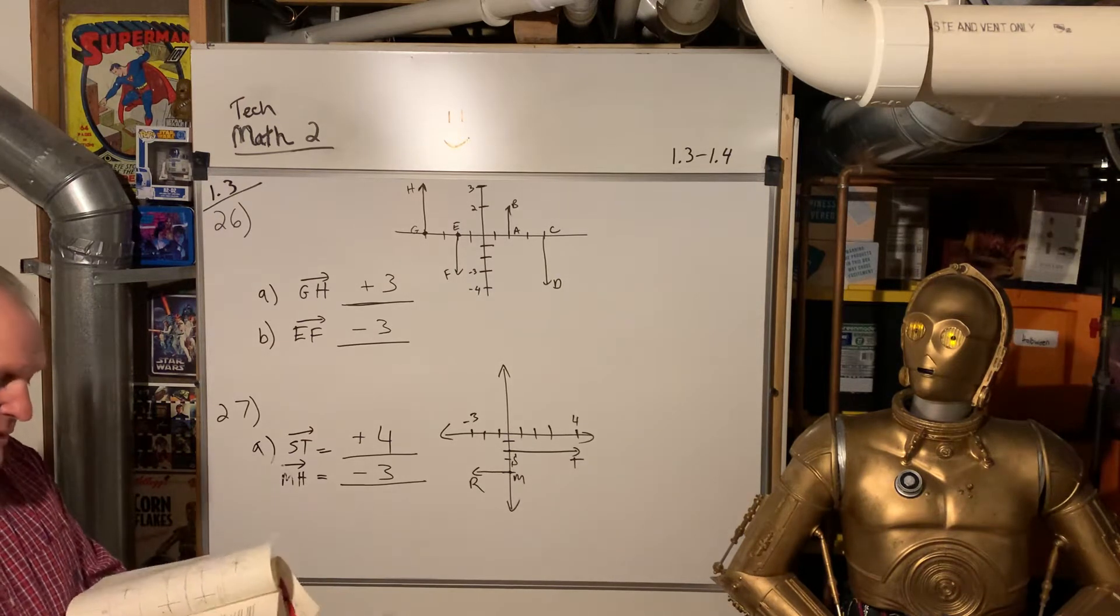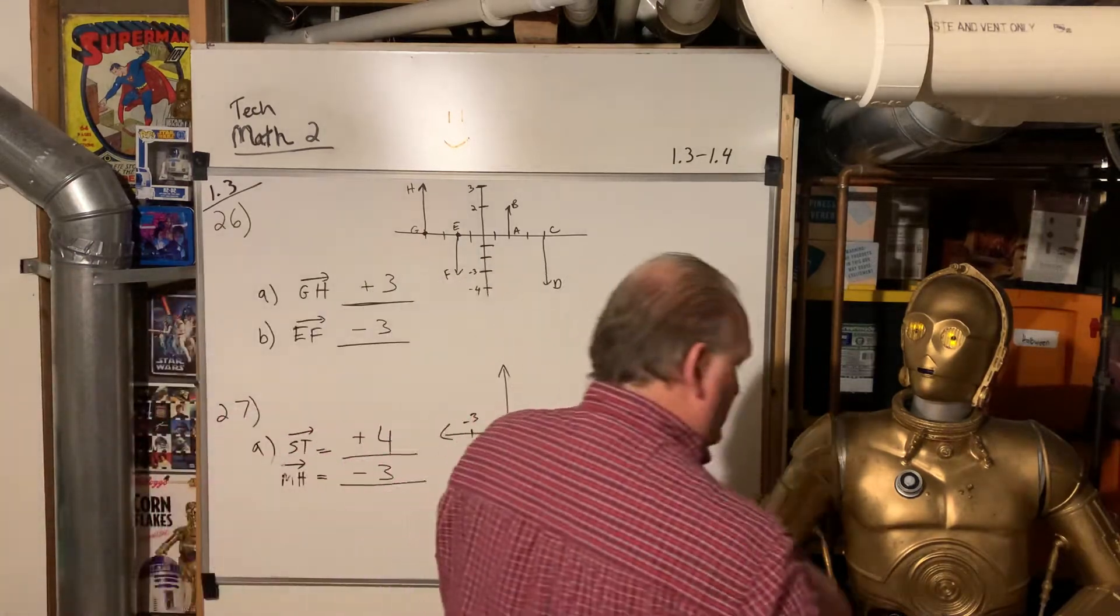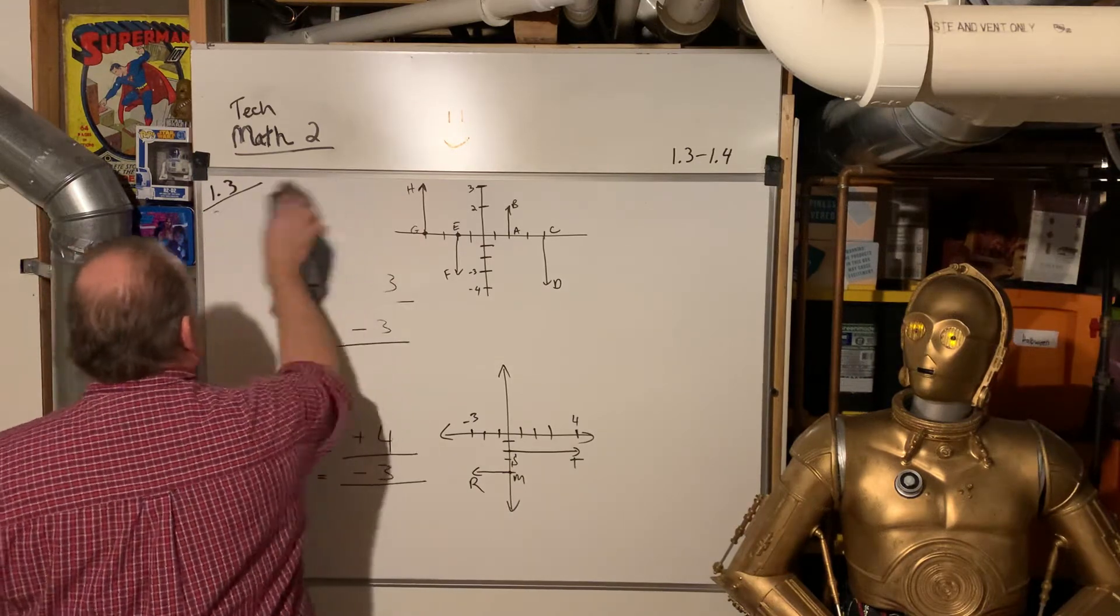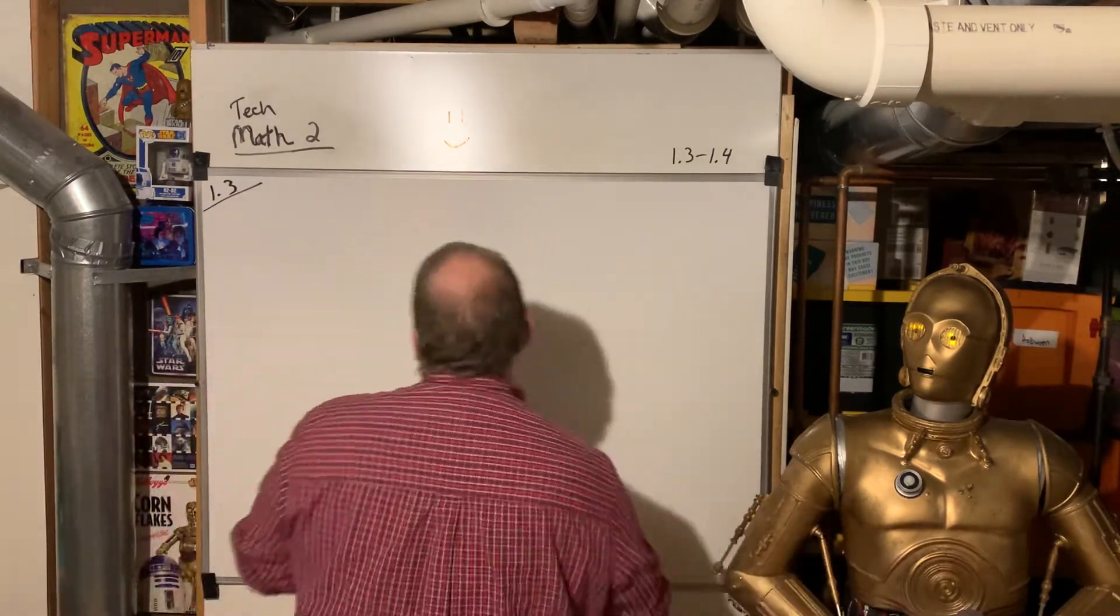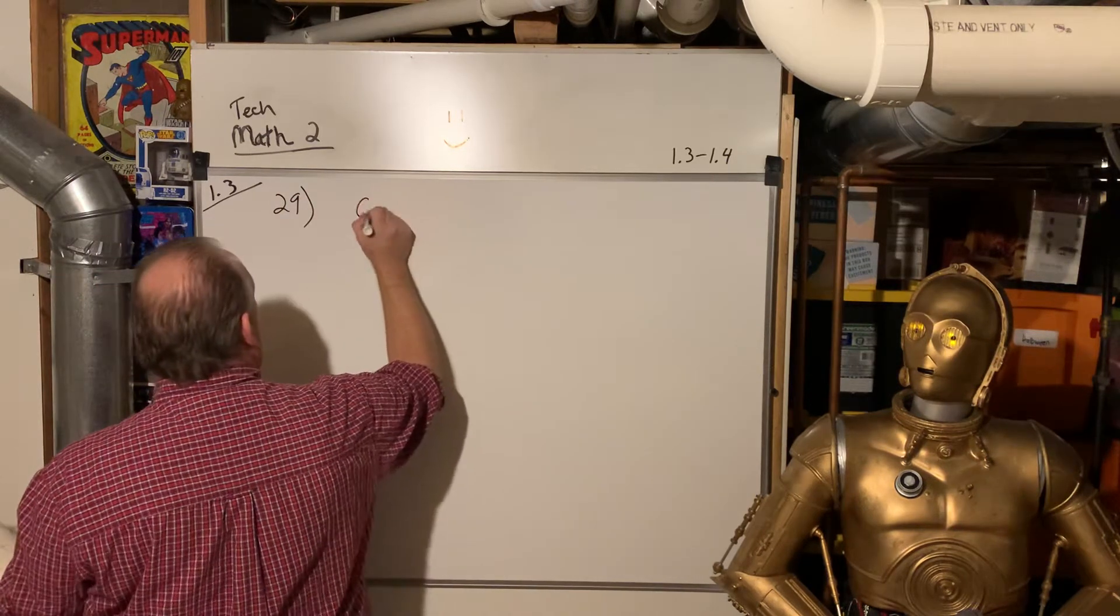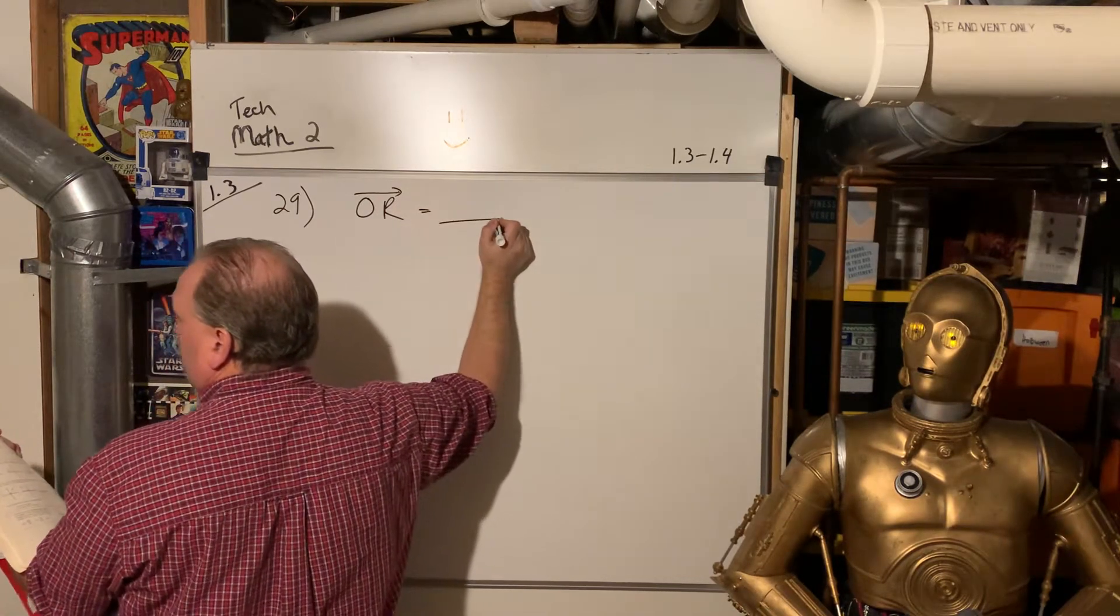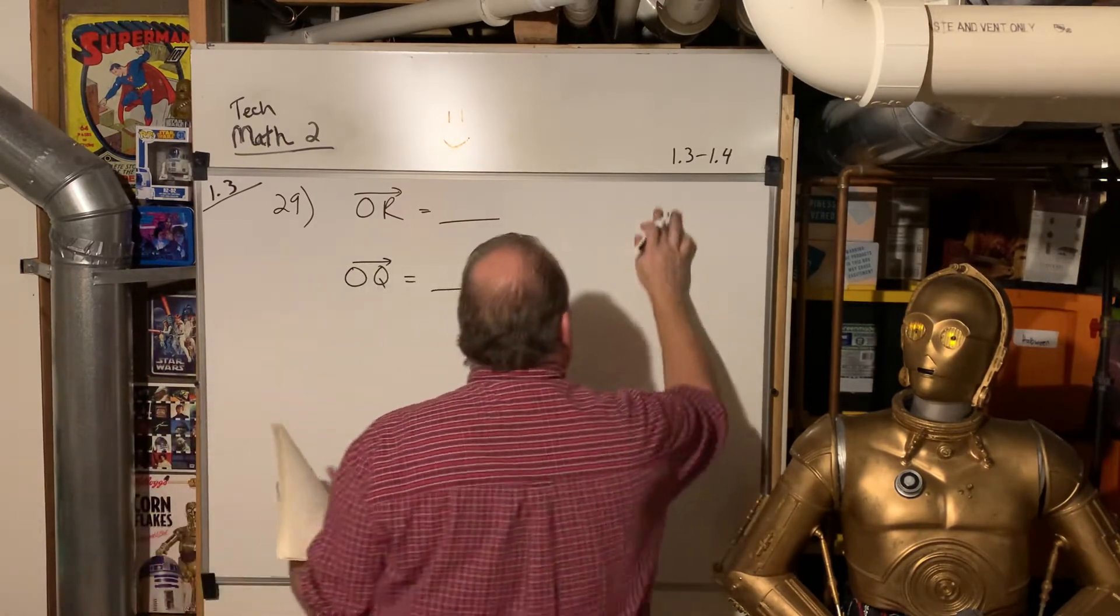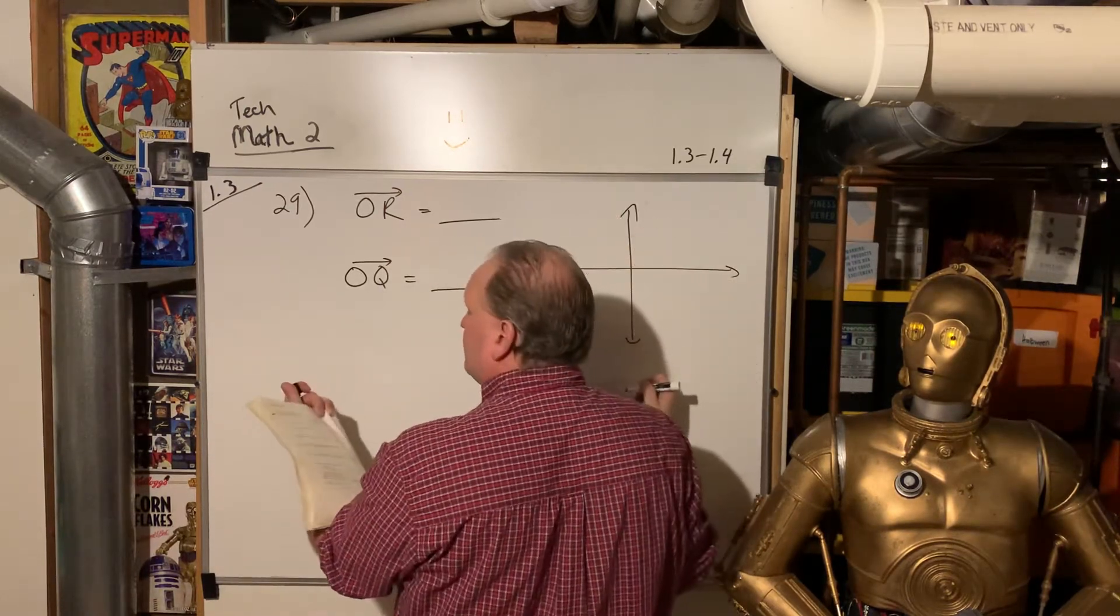So what about if it's on an angle? Well, if it's on an angle, then we either have to bust out our sweet Pythagorean theorem skills, or if you take a look at 29 on the next page, it looks like this, where we have OR and OQ.